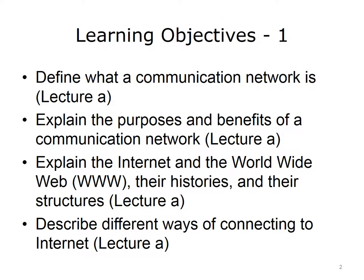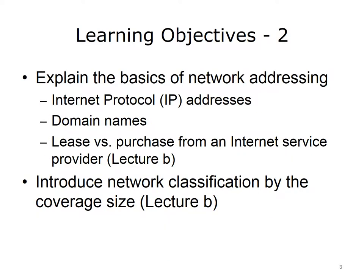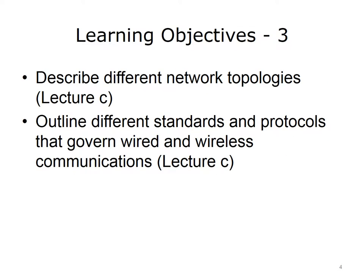The objectives for this unit on networks are to define what a communication network is, explain the purposes and benefits of a communication network, explain the Internet and the World Wide Web, their histories and their structures, describe different ways of connecting to the Internet, explain the basics of network addressing, Internet Protocol or IP addresses, and domain names and how they can be leased or purchased from an Internet service provider, and introduce network classification by the coverage size, and describe different network topologies, and outline different standards and protocols that govern wired and wireless communications.